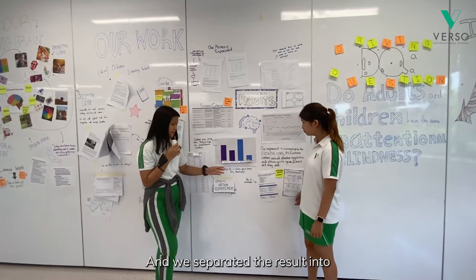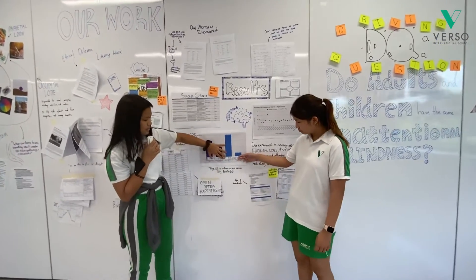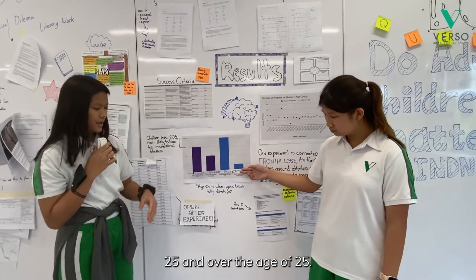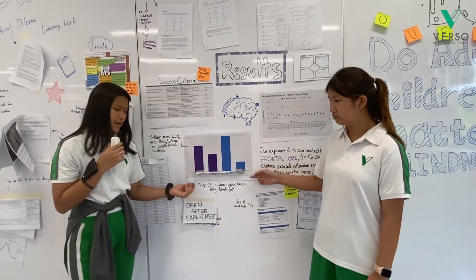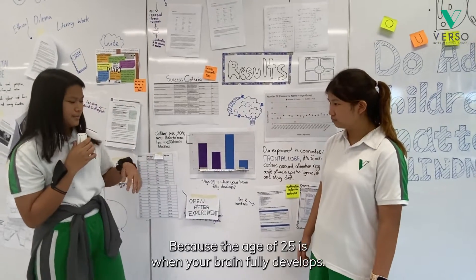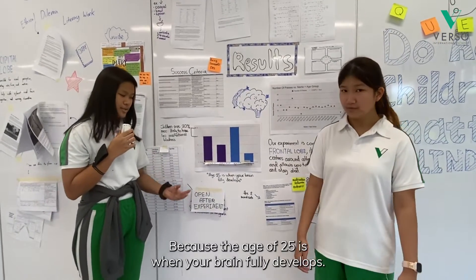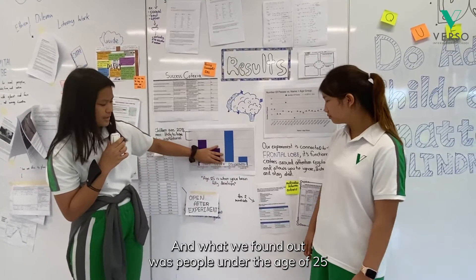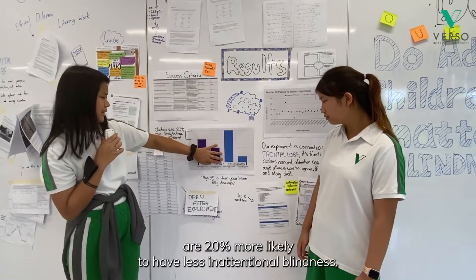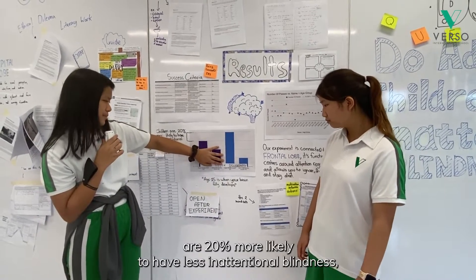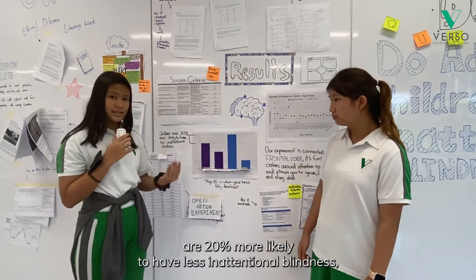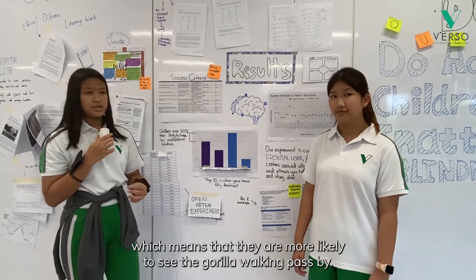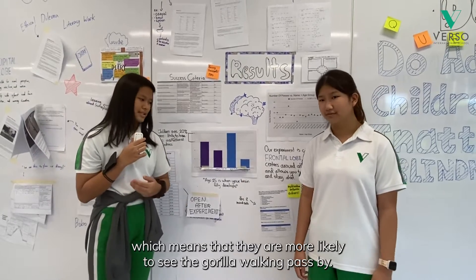We separated the results into people under the age of 25 and over the age of 25, because the age of 25 is when your brain fully develops. What we found out was that people under the age of 25 are 20% more likely to have less inattentional blindness, which means they are more likely to see the gorilla walking past.